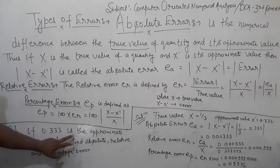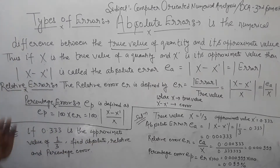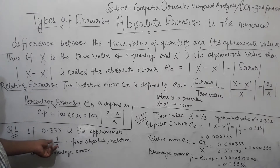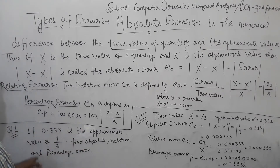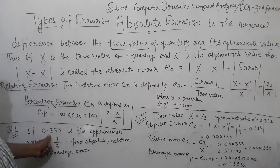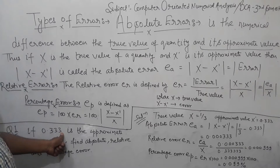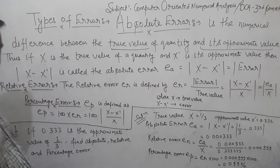Here is our first question: The approximate value of 1/3 is given as 0.333. Find the Absolute Error, Relative Error, and Percentage Error. So 0.333 is the approximate value of 1/3. We will find the absolute, relative, and percentage error for this case.